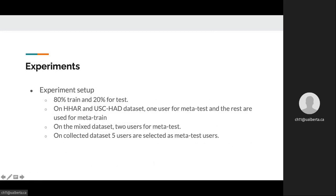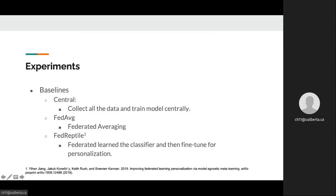For each user, we split the local dataset into training and testing. On HHAR and USC-HAD datasets, we randomly select one user as the meta-test user and train our model on the rest of the users. On the mixed dataset, two meta-test users are selected from HHAR and USC-HAD respectively. On the large collected dataset, five users are randomly sampled as meta-test users.